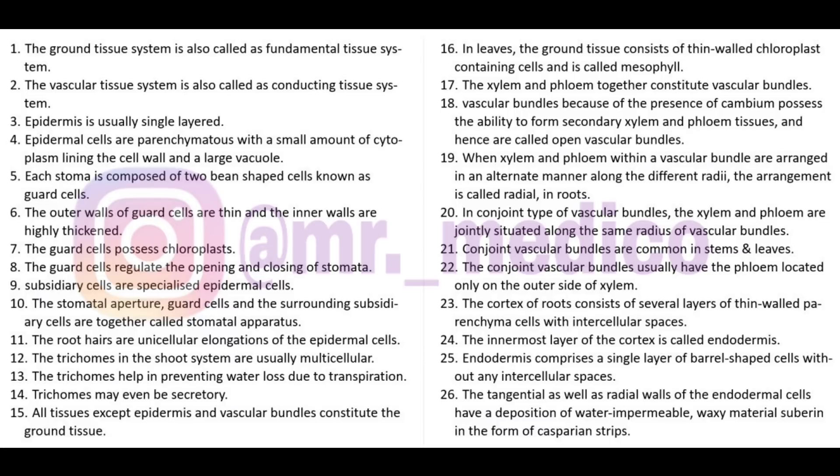Each stoma is composed of two bean-shaped cells called guard cells. In monocots, guard cells are dumbbell-shaped, and in dicots they are bean-shaped. The outer wall of the guard cell is thin and the inner wall is highly thickened.